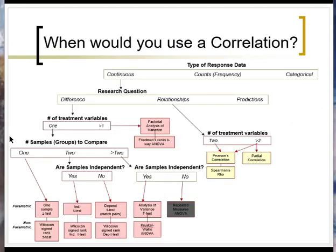So how do you know when to run a correlation? If we look at our dichotomous key, we still have a continuous response variable. This time, instead of looking for differences, we're looking for relationships among those variables. We have to ask ourselves: are there only two variables that we're testing relationships between? If that's the case, we can just use a Pearson's correlation.